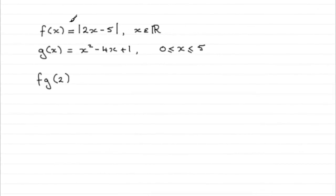Okay, for this one then, we're given f of x equals the mod of 2x minus 5 and a new function, g of x equaling x squared minus 4x plus 1, where x is greater than or equal to 0 but less than or equal to 5.